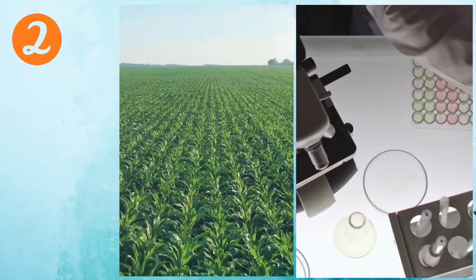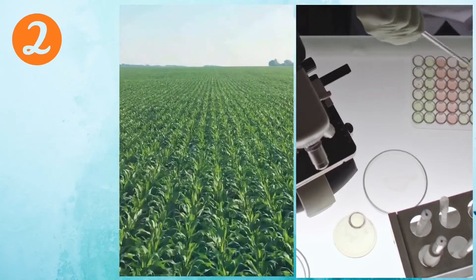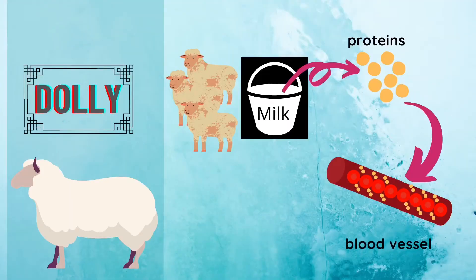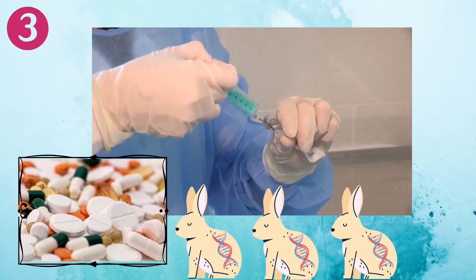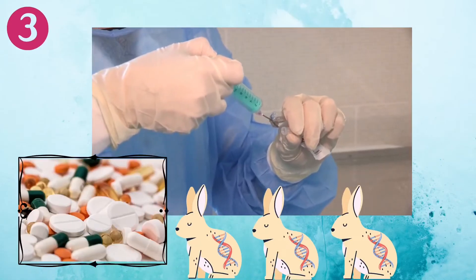Reproductive cloning helps in the fields of agriculture and medicine. You may remember Dolly the sheep from a previous video. The Scottish scientists who created Dolly had also cloned more sheep with the protein crucial for blood clotting in humans. This protein can be purified from the milk and provided to people whose blood cannot clot well.